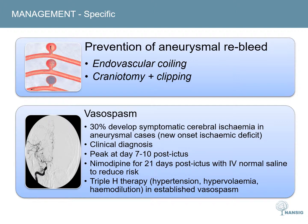Vasospasm is a devastating complication in subarachnoid haemorrhage. It can peak up to one week after the bleed. Nimodipine is administered for 21 days after the ictus in all patients, given orally at a dose of 60 mg every four hours. If they develop symptomatic vasospasm despite this, Triple H therapy can be considered. The most important component is hypertension, achieved using inotropes in an HDU or ICU setting. It is important that the aneurysm is secured prior to this. If this fails, intra-arterial nimodipine can be considered.